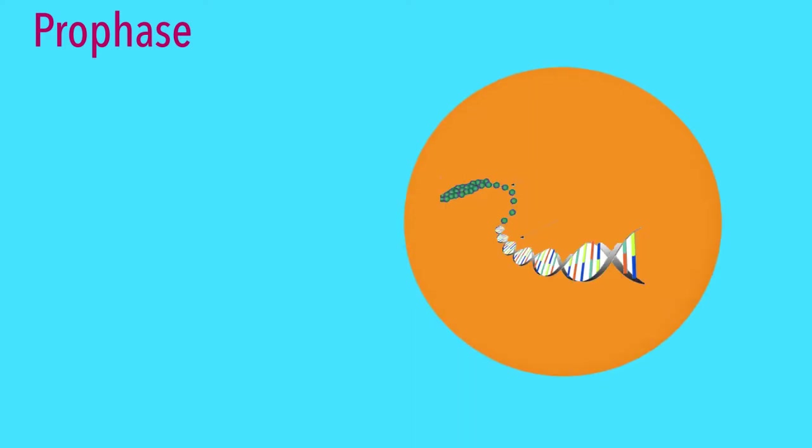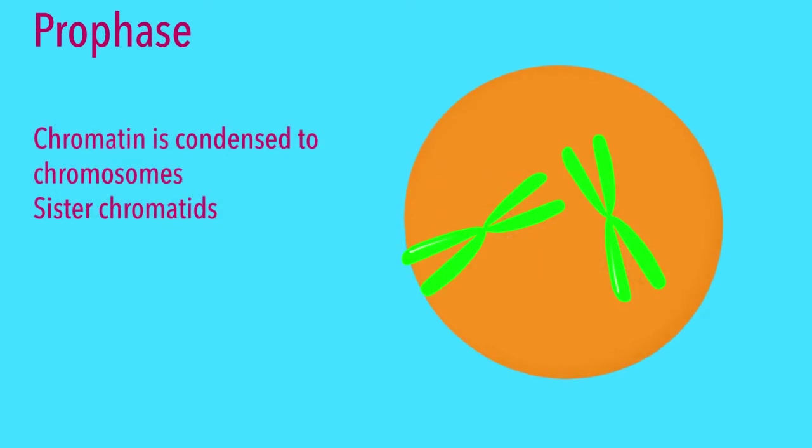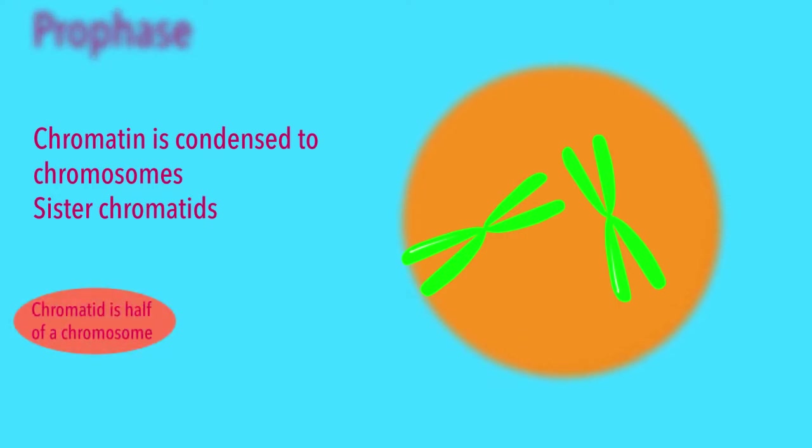The prophase is the first phase in mitosis. Many things happen in prophase. First, the chromatin, which is DNA and proteins, is condensed from being long-thread to paired chromosomes, aka sister chromatids. Wait, could you explain what chromatids are again? A chromatid is half of a chromosome. When two chromatids are together, they are a chromosome, or sister chromatids.